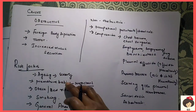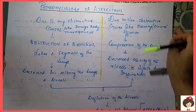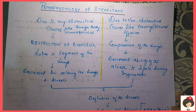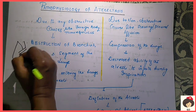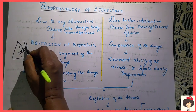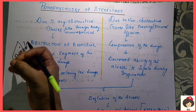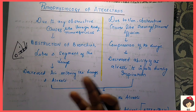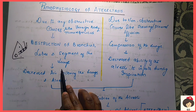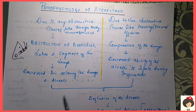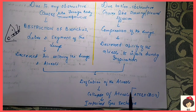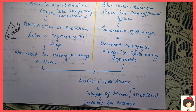Next, coming to the pathophysiology of Atelectasis. Due to obstructive causes like foreign body, tumor, or mucus — if there is something obstructing anywhere in the bronchioles or bronchus — air cannot enter properly into the lungs. Only if the air is entering properly can alveoli inflate and deflate. Because air is not entering, they are not inflated and go for collapse. Any foreign body causes obstruction of bronchus, lobes, and segments of the lungs, so decreased air enters the alveoli, the alveoli become deflated, and collapse — that is Atelectasis.